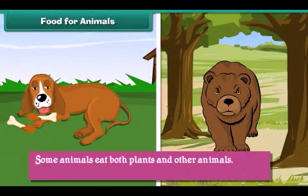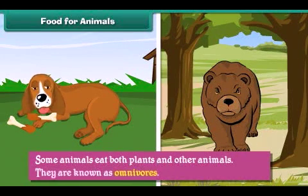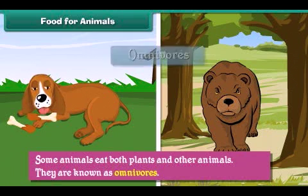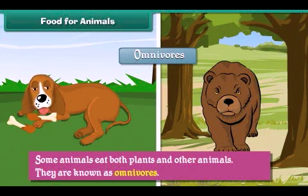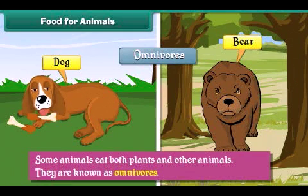Some animals eat both plants and other animals — they are known as omnivores. Examples of omnivores are bears and dogs.